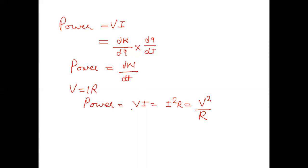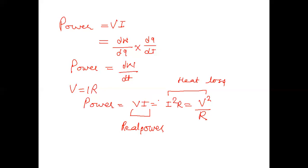In a practical way, VI is called real power, while I²R and V²/R represent heat loss across the resistor. Theoretically the quantities from VI, I²R, and V²/R are equal, but in practice VI is real power and I²R and V²/R represent heat loss across the resistor. These are the basic concepts of voltage, current, and power.